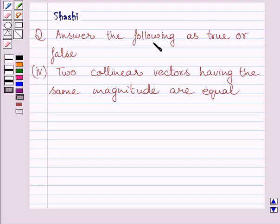Question says, answer the following as true or false. Given statement is, two collinear vectors having the same magnitude are equal.